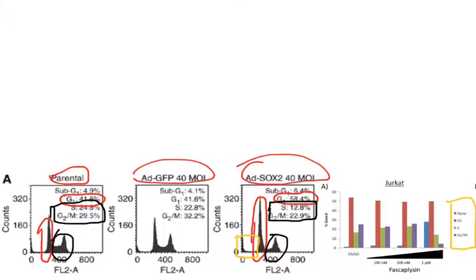On the right, they have just taken the data from the raw data on the left and graphed it. Sometimes you'll see that in a figure where they'll say, this is the percentage of cells that are apoptotic or sub-G1, G1, S, G2, and M.